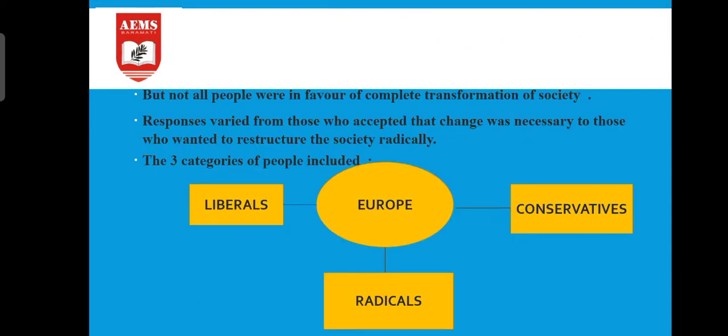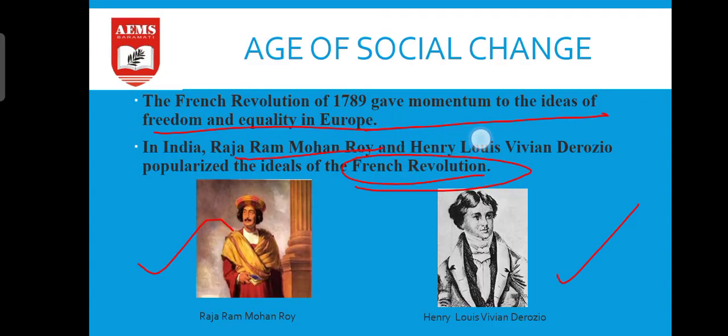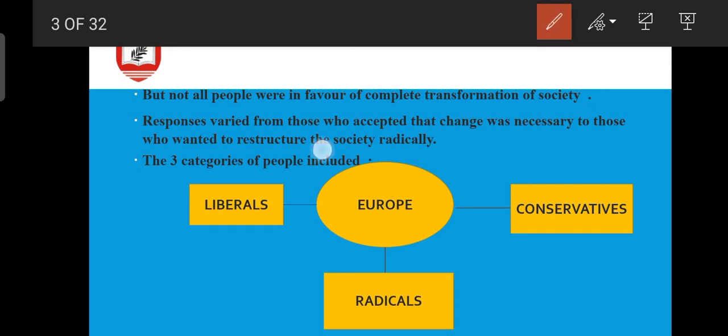Not all people were in favor of complete transformation of society — there were only a few people who wanted change. Revolution is a change, a change in society, and we know everybody cannot be happy with change. In the Russian Revolution, very few people wanted to accept that change. Response varied from those who accepted that change was necessary to those who wanted to reconstruct the society radically.